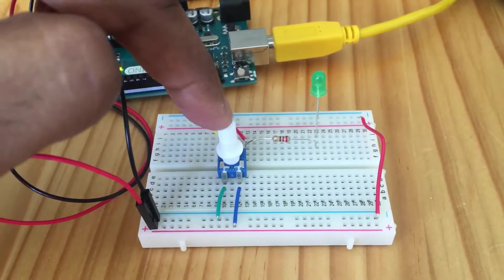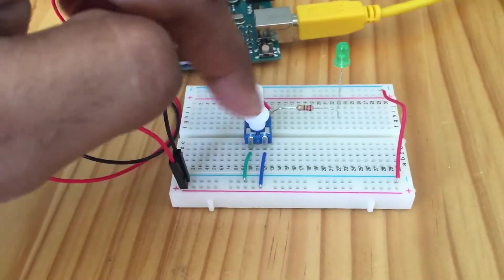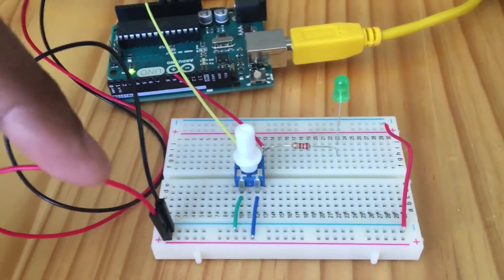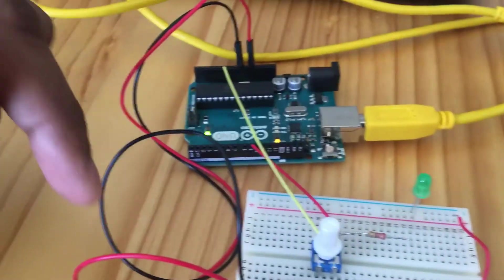This is my potentiometer connected. I've got a 220 ohm resistor and a green LED.